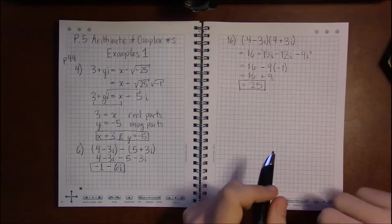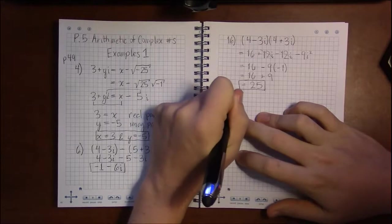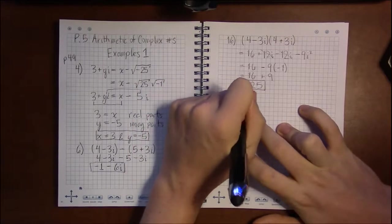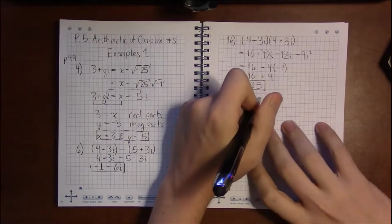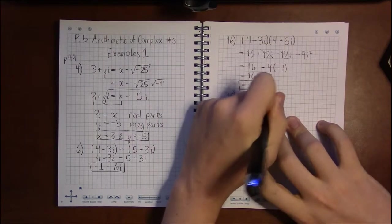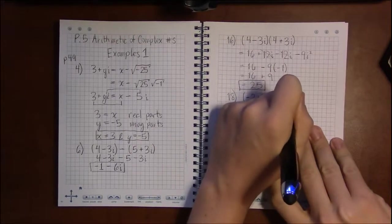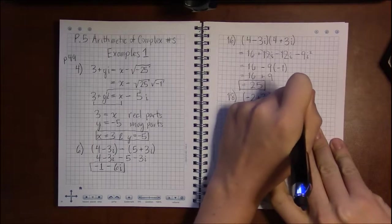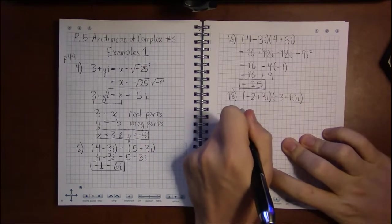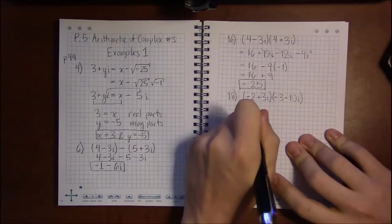So let's take a look at 18, where we're doing minus 2 plus 3i and minus 3 plus 10i. So, again, formula if you like, but that's not my style. I FOIL, I distribute.